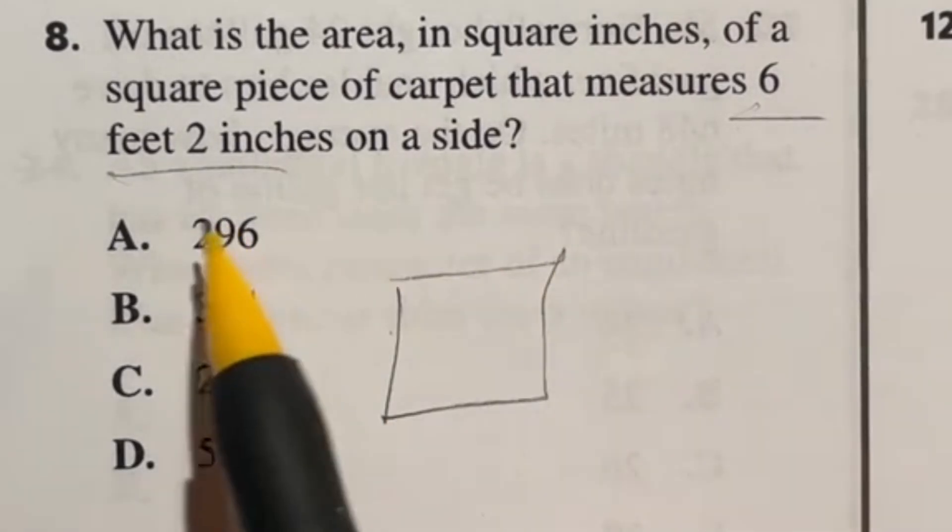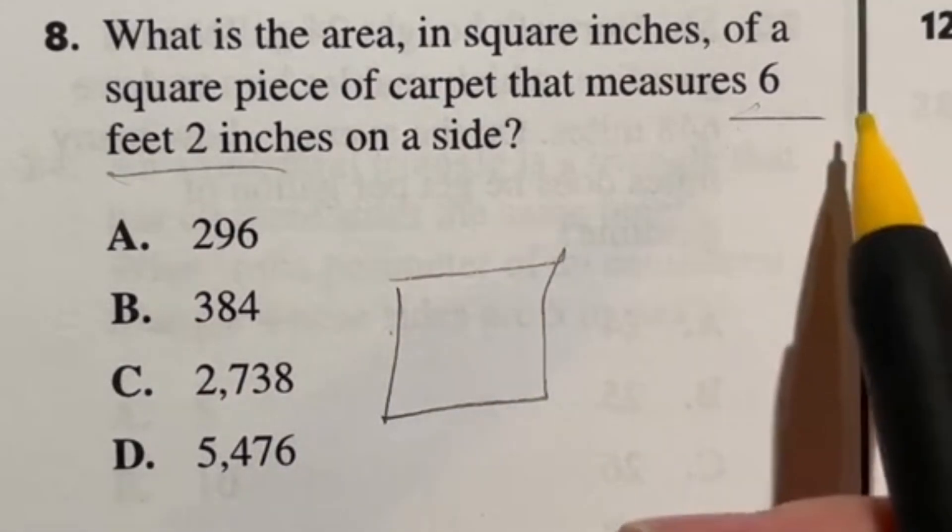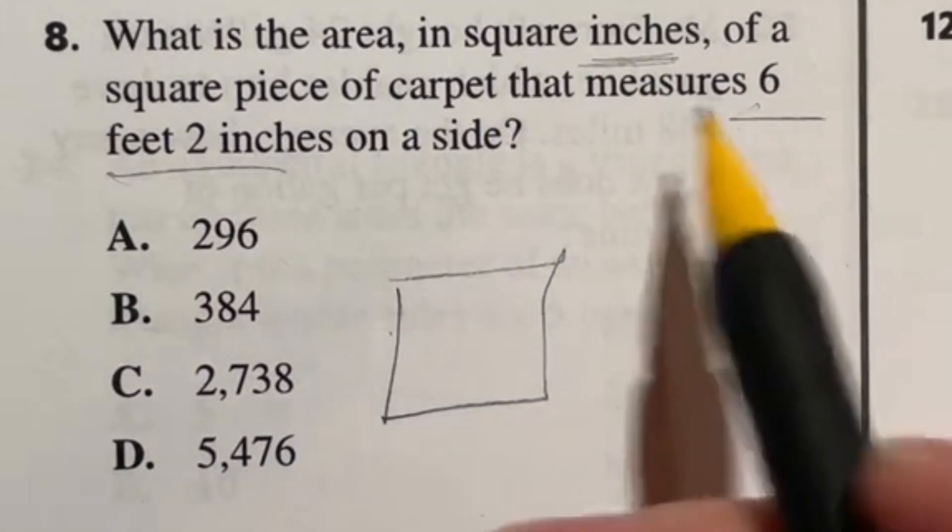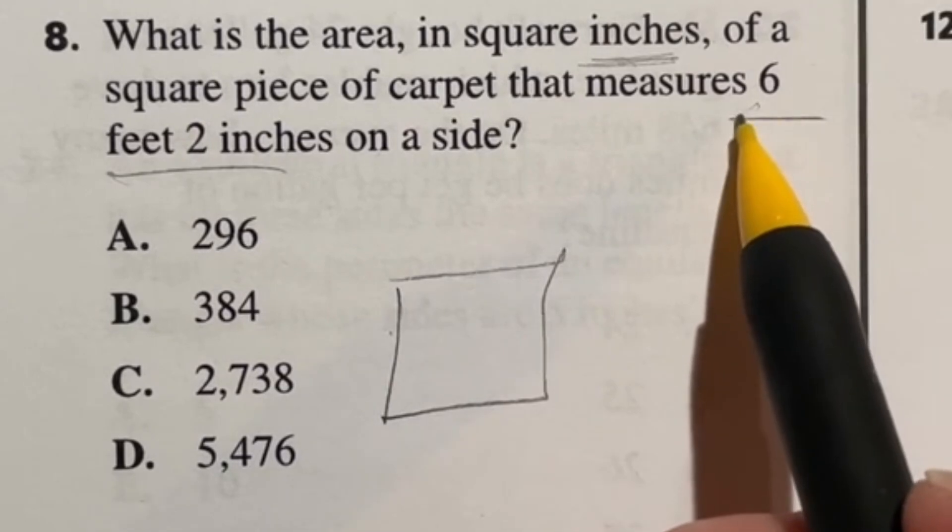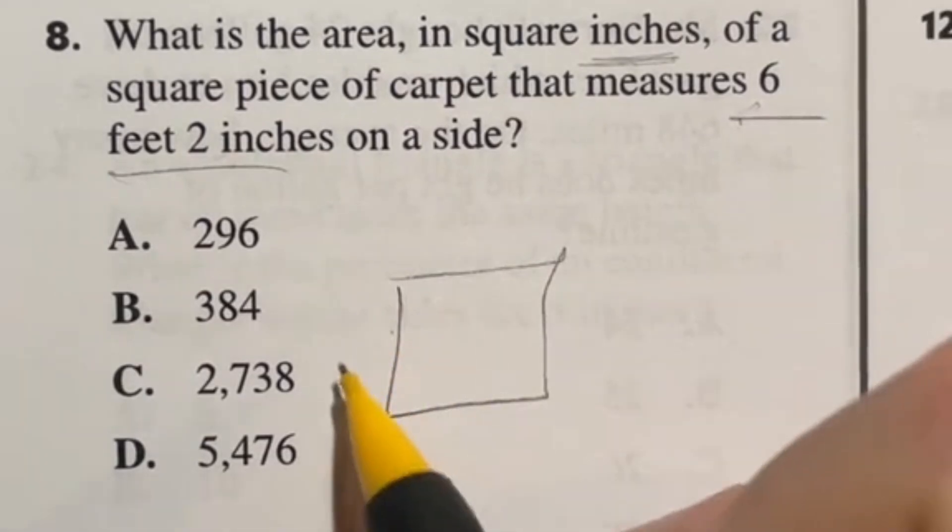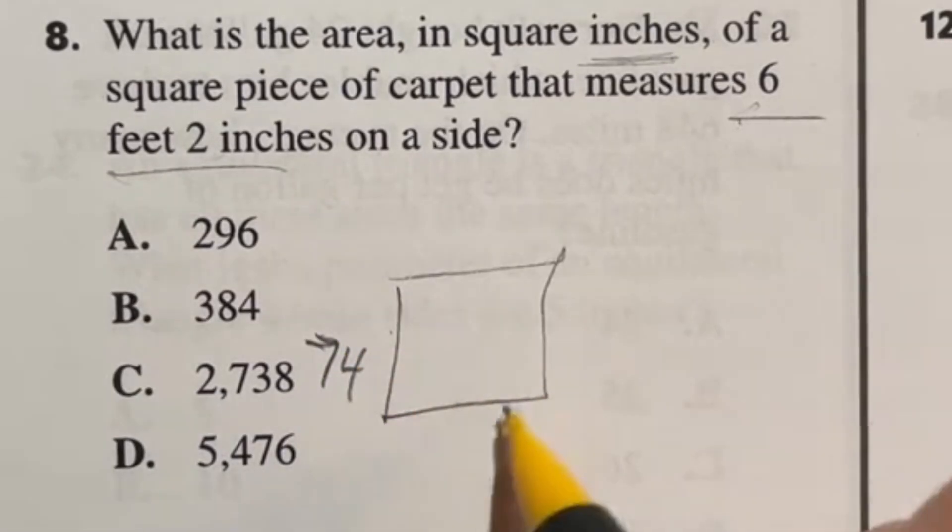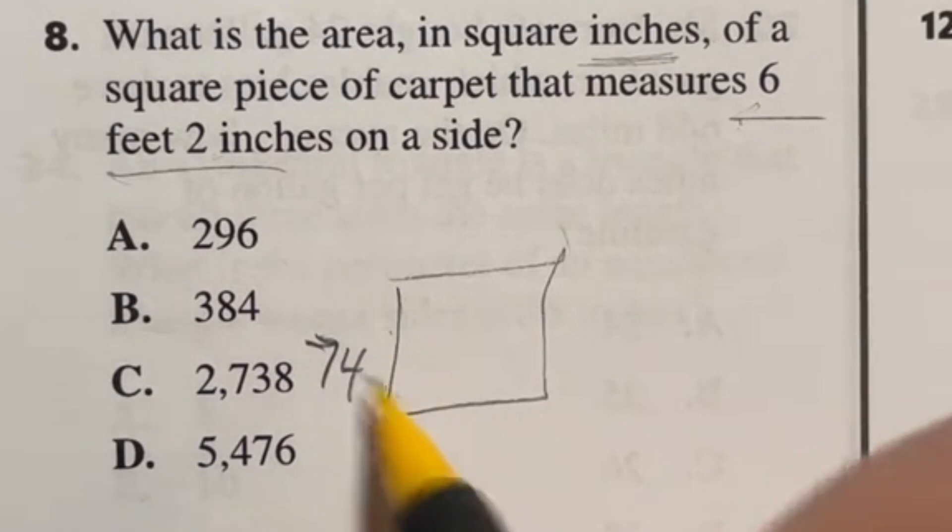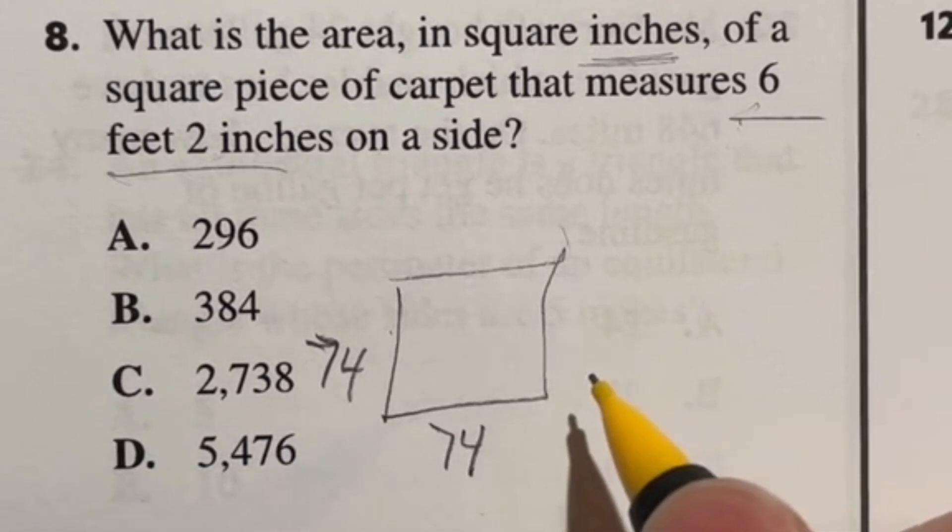In this case, we have a six foot two side length on a square. I'm going to convert to inches because we're dealing with square inches here. Remember there are 12 inches in a foot. So six times 12 gives me 72 plus that two more gives me a side length of 74. Now we're finding the area. Area of a square is length times width, or in this case, it would just be 74 times 74, also known as 74 squared.